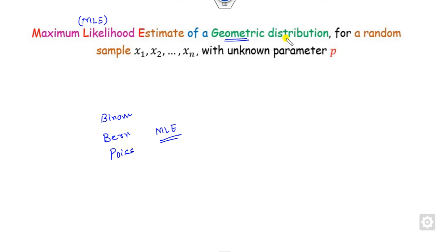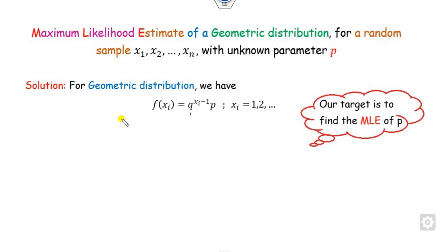In the case of geometric distribution, this is the probability mass function. How many unknown parameters are there? Only P. Why? Because you can express Q as 1 minus P. So how many unknown parameters? Only one.